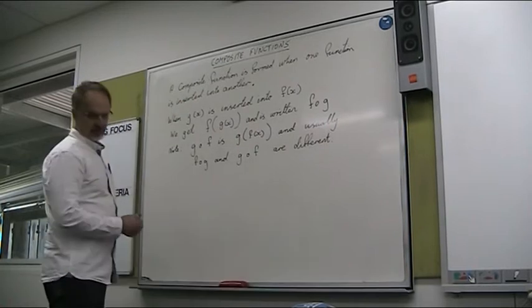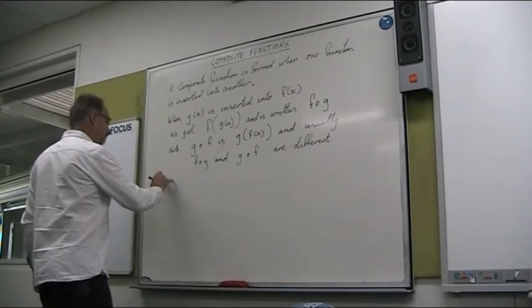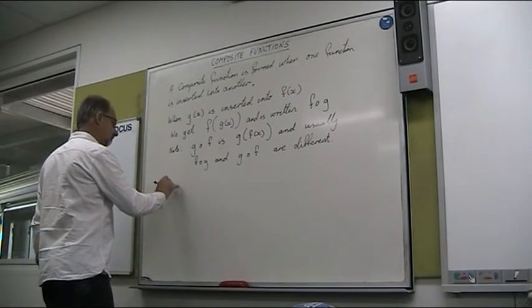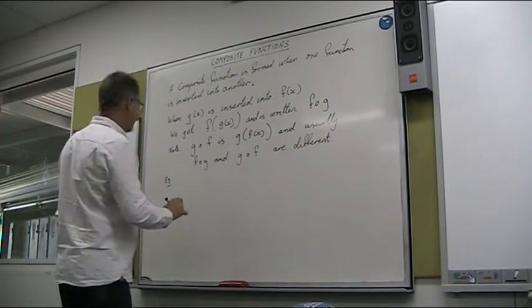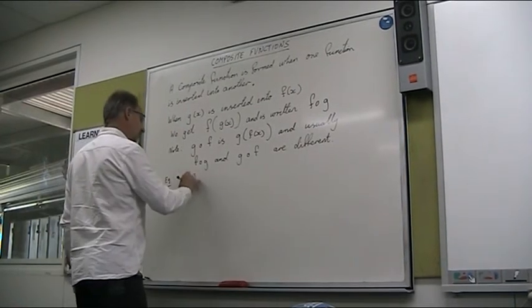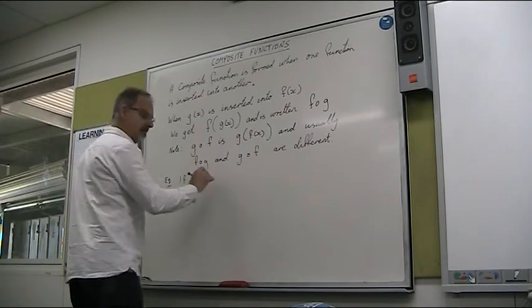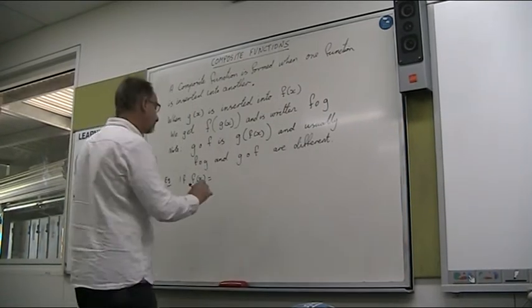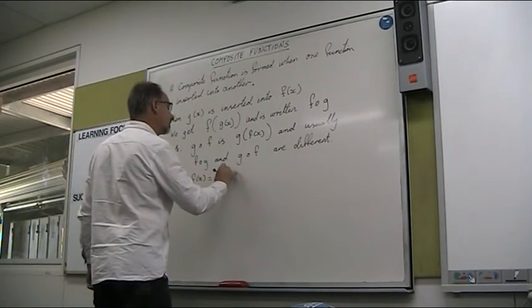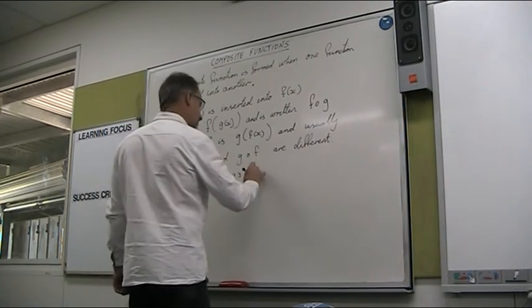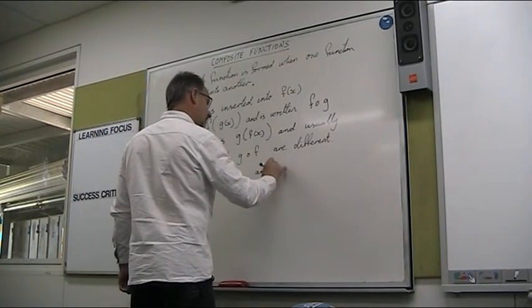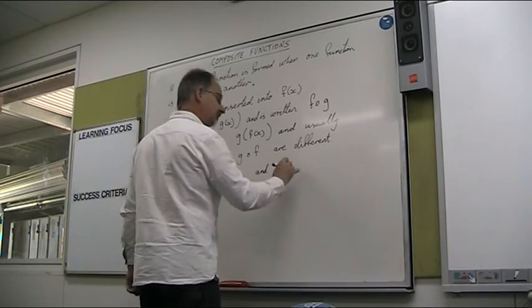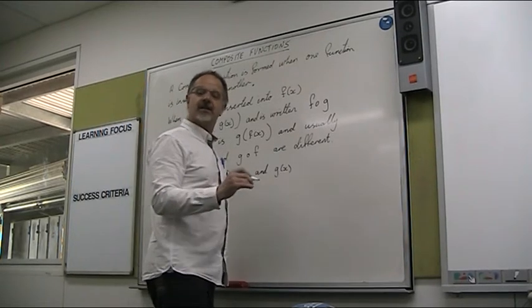Alright, so let's have a look at an example. So if f of x is 2x squared plus 3 and the g of x is x plus 2.